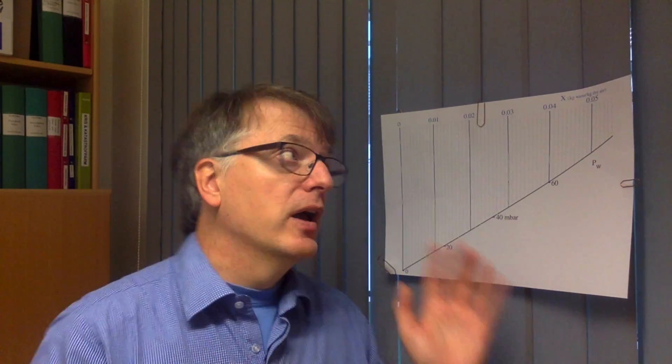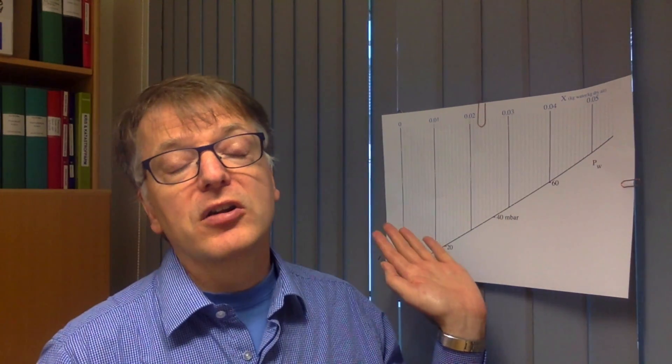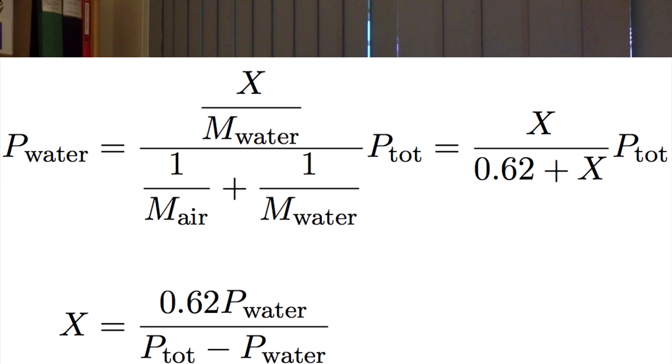Now, usually we draw these diagrams for a certain total pressure. And if you know the total pressure and you know how many kilograms of water you have per kilogram of dry air, you can use the ideal gas law to calculate what the partial pressure of water is. So if the total pressure is known, you can directly calculate the partial pressure from the water content or vice versa.